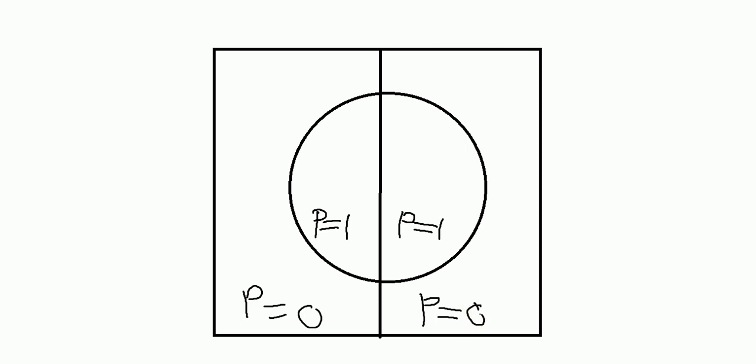Now considering the left half having actual equal to one, your actual values are one. Inside you have predicted equal to one, outside you have predicted equal to zero. Then on the right hand side you have actual equal to zero, predicted equal to zero in that area. And inside you have actual equal to zero and predicted equal to one.